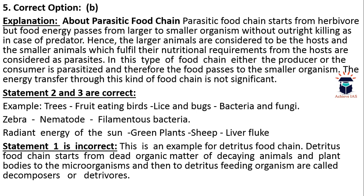The answer is B — second and third only. A key unique feature of a parasitic food chain is that food energy passes from larger to smaller organisms. While most food chains start with herbivores at the base, the distinctive characteristic of a parasitic food chain is that organisms at higher trophic levels may be smaller — but multiple smaller organisms can feed upon a single individual of a species. Statement one is incorrect; statements two and three are correct.